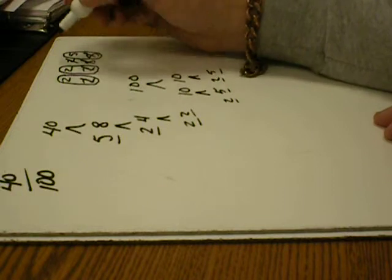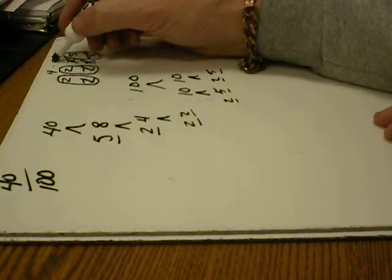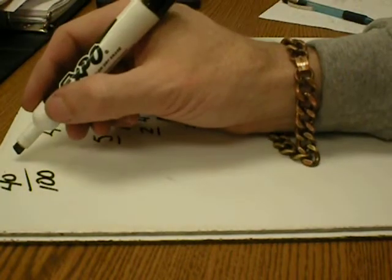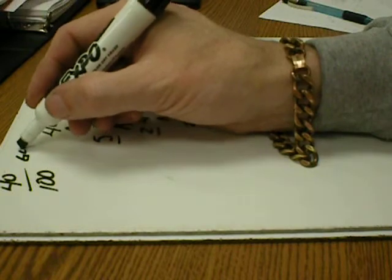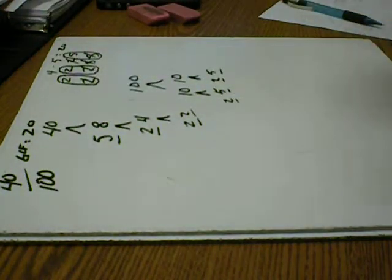So 2, 2, and 5. 2 times 2 is 4. 4 times 5 equals 20. And so the GCF on this equals 20. And that's what you would divide by to put it in its simplest form. And that's all there is to it.